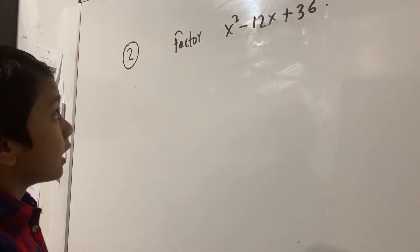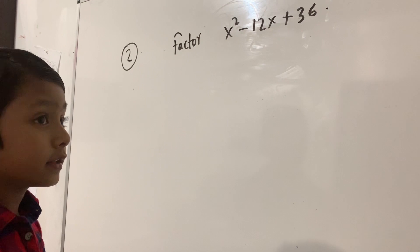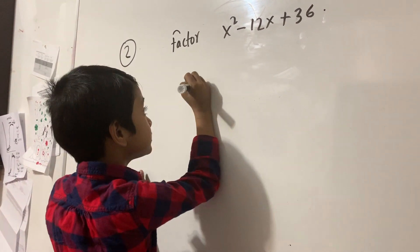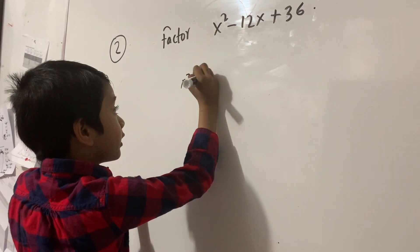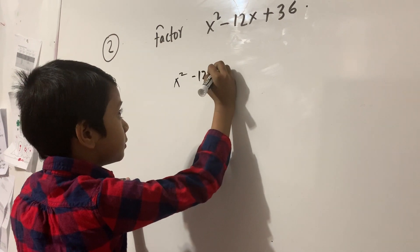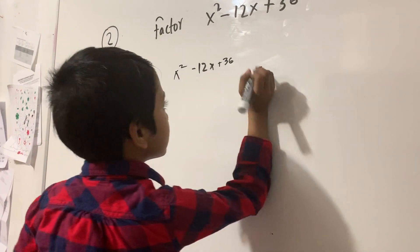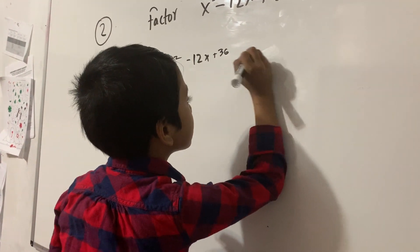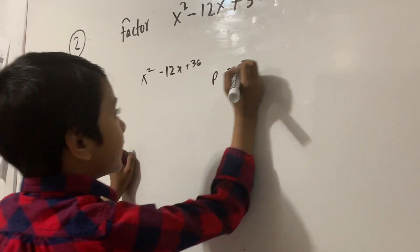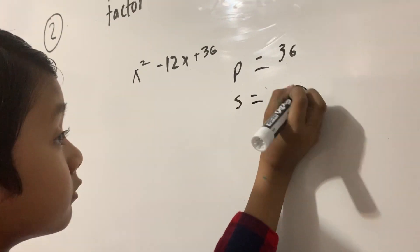Factor x squared minus 12x plus 36. So x squared minus 12x plus 36, right? So you're trying to find two numbers whose product is 36 and sum is minus 12.